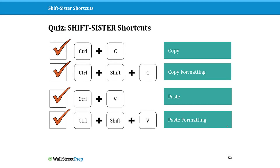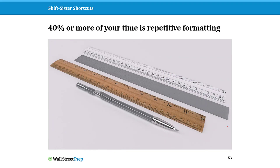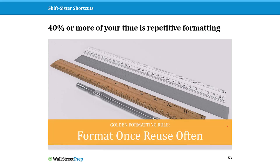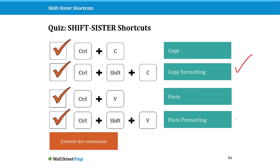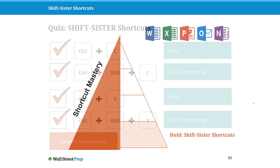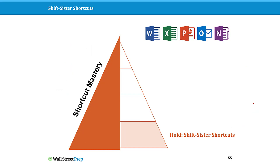The reason Ctrl+Shift+C and Ctrl+Shift+V are particularly important in PowerPoint is that formatting can eat up 40% or more of your time in the program — text, shape fills, shape outlines, transparency, outline weights, charts, tables, everything needs formatting. So when I teach PowerPoint, to the extent that you can format once and reuse often using these keyboard shortcuts, you want to get your formatting right — shape fills, text size, text color, shape outline weights — format them once, then reuse that object formatting as much as possible. The last thing you want to do is reformat things over and over again.